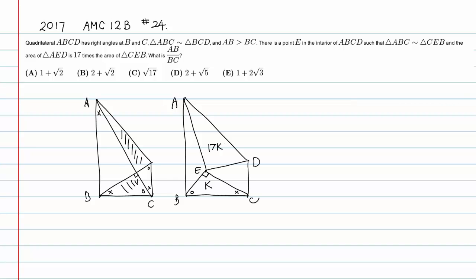We need to find AB over BC, the ratio of those two sides. The easiest way is to let AB equal X and BC equal 1. Using one variable is much better than two variables. With these two numbers we can find the area of all the triangles.